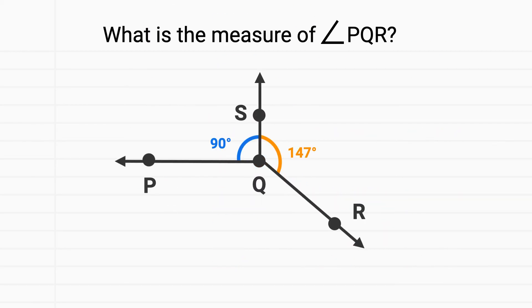Here's another problem to practice with. What is the measure of angle PQR? Well we can think that angle PQR is made of angle PQS in blue, which has a measure of 90 degrees, and angle SQR in orange, which has a measure of 147 degrees.